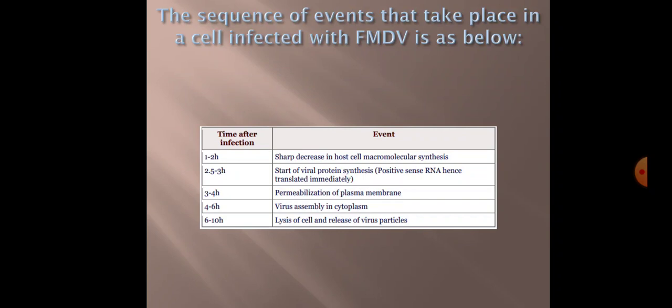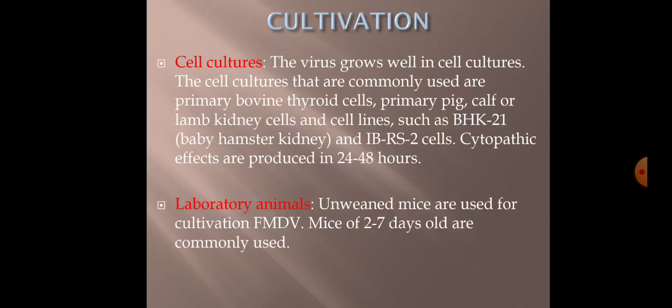The sequence of events in an FMD virus-infected cell: at 1–2 hours, there is a sharp decrease in host cell macromolecular synthesis; at 2.5–3 hours, viral protein synthesis begins; at 3–4 hours, permeabilization of the plasma membrane occurs; at 4–6 hours, virus assembly takes place; and at 6–10 hours, lysis of the cell and release of virus particles occurs. The entire replication cycle completes in approximately 6 to 10 hours.